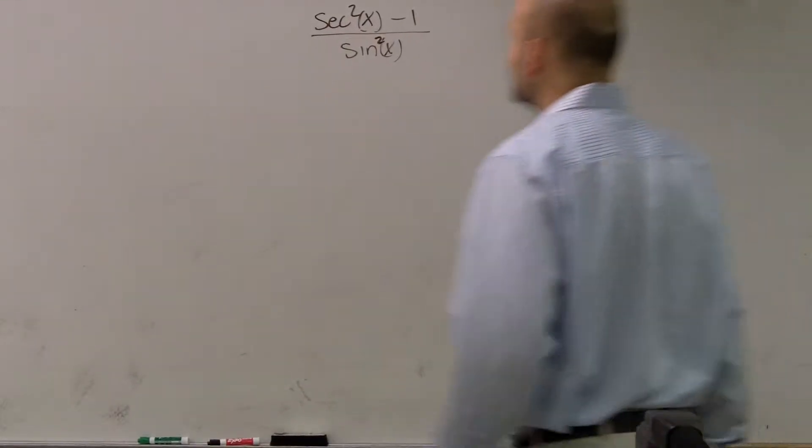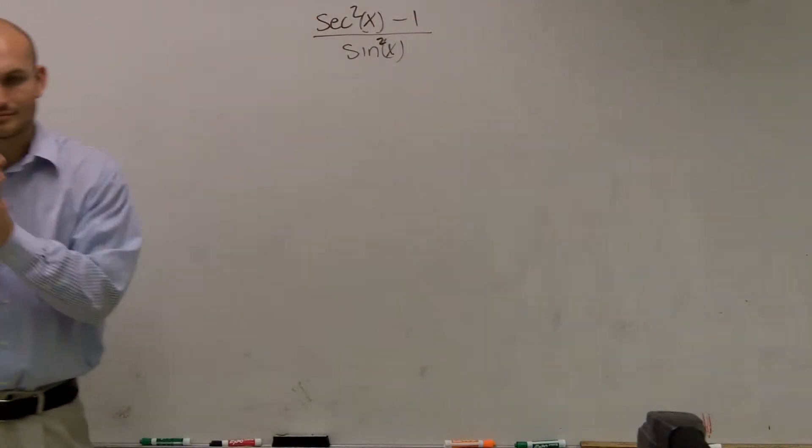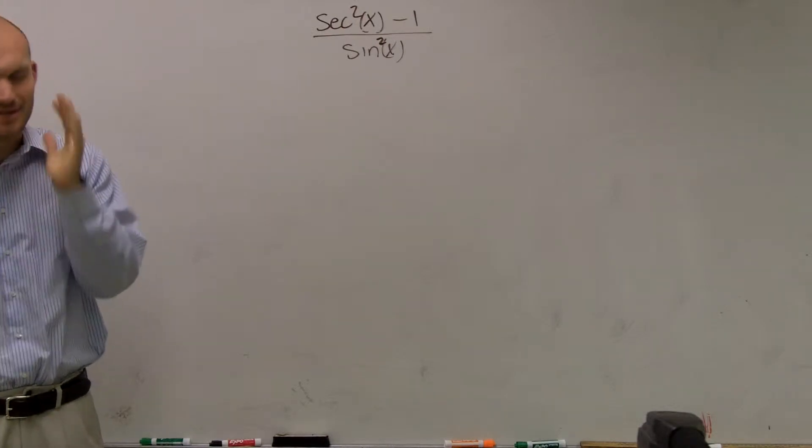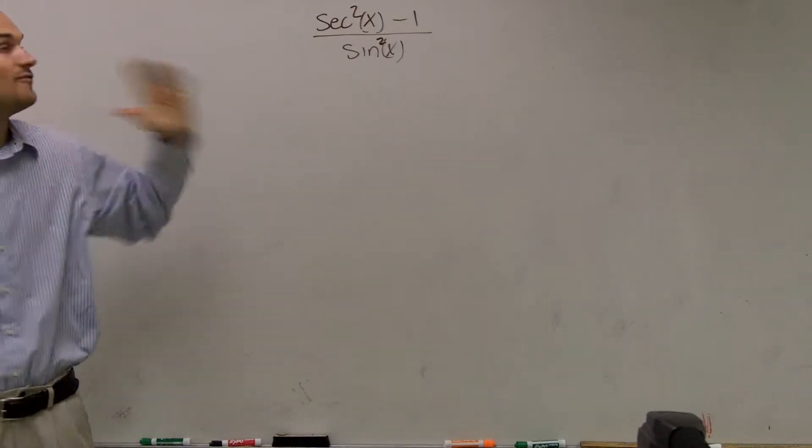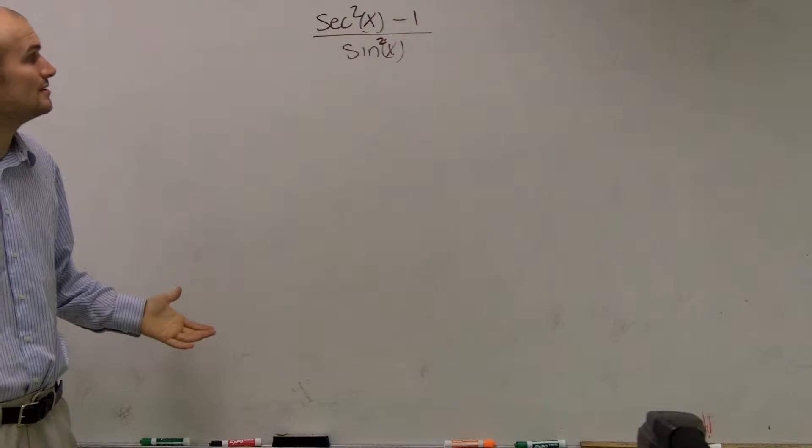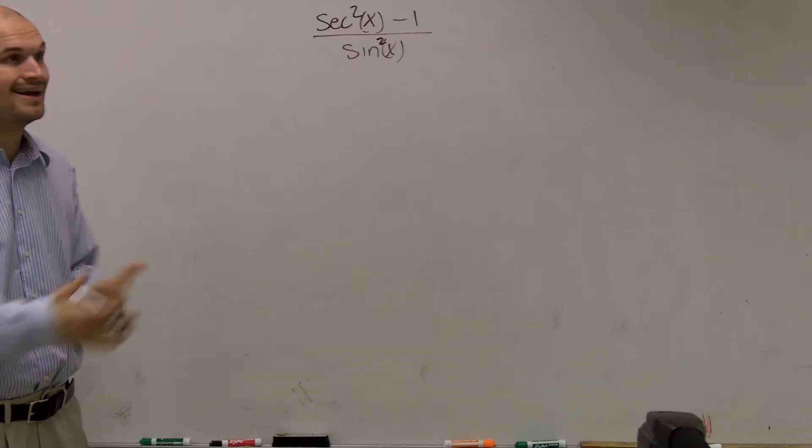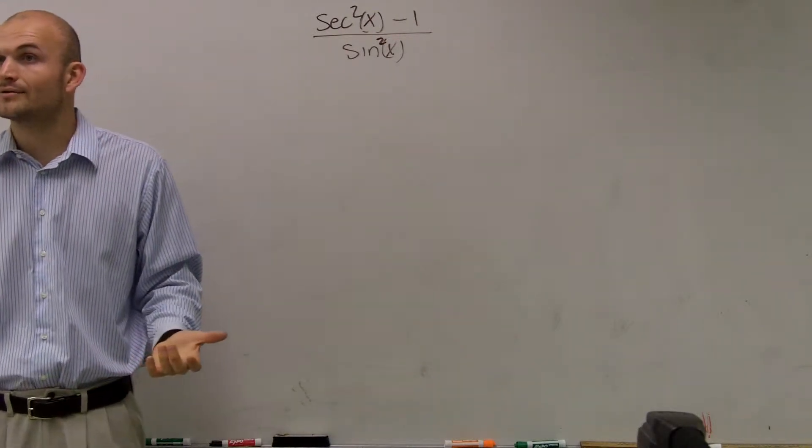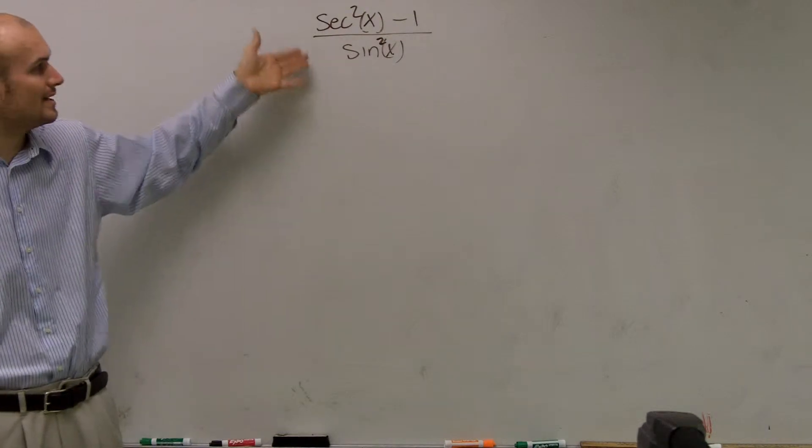You can't miss the trig identity. All right. So right up here, guys, automatically, when I see this problem, the first thing I look at is I see secant squared of x minus 1. I've got to be using some kind of trig identity, right? Because I don't know really anything else.